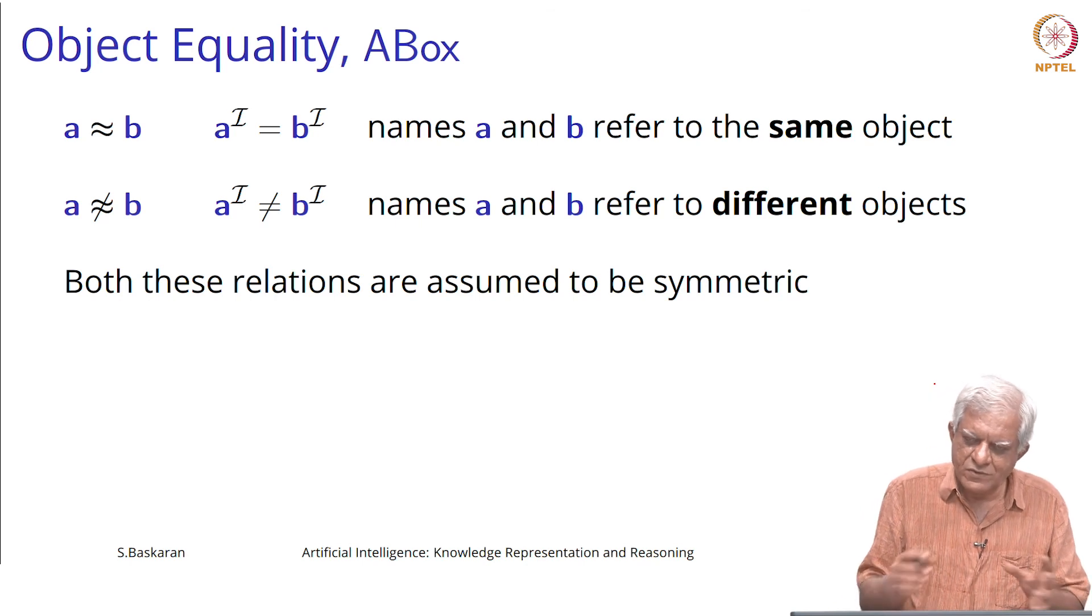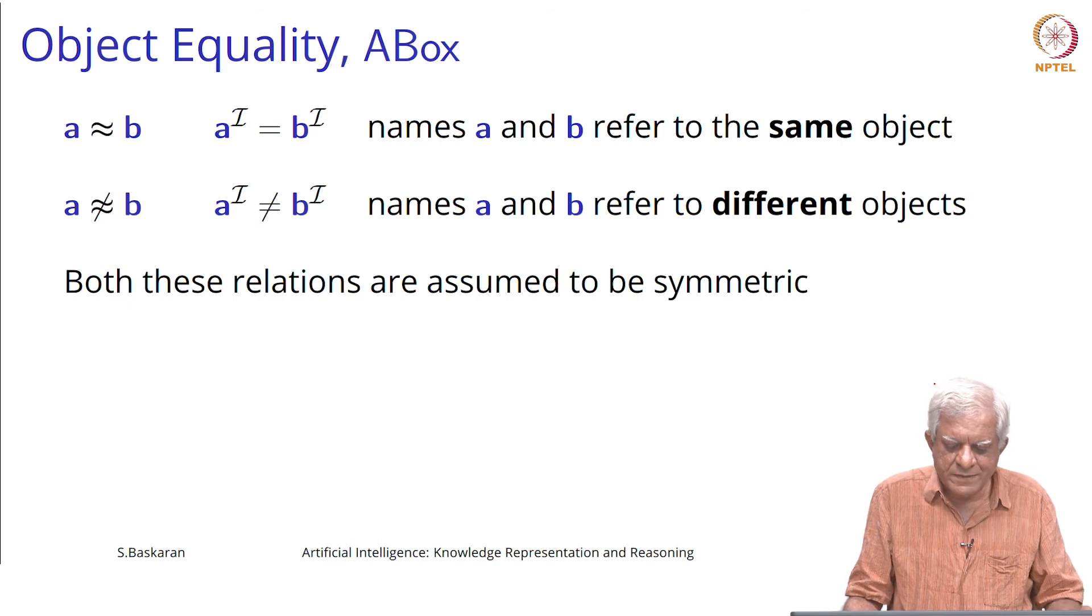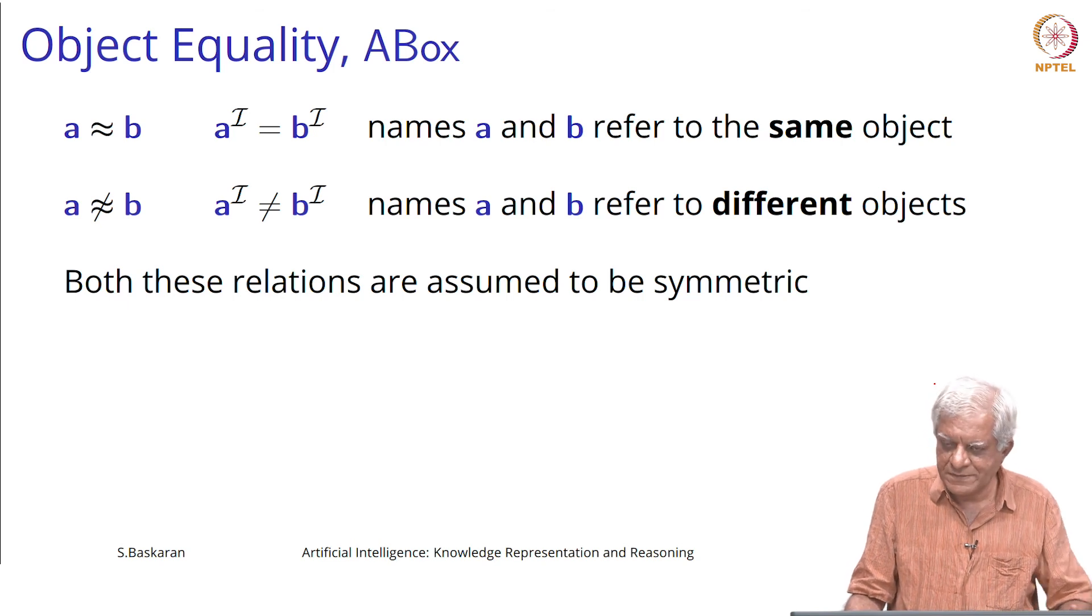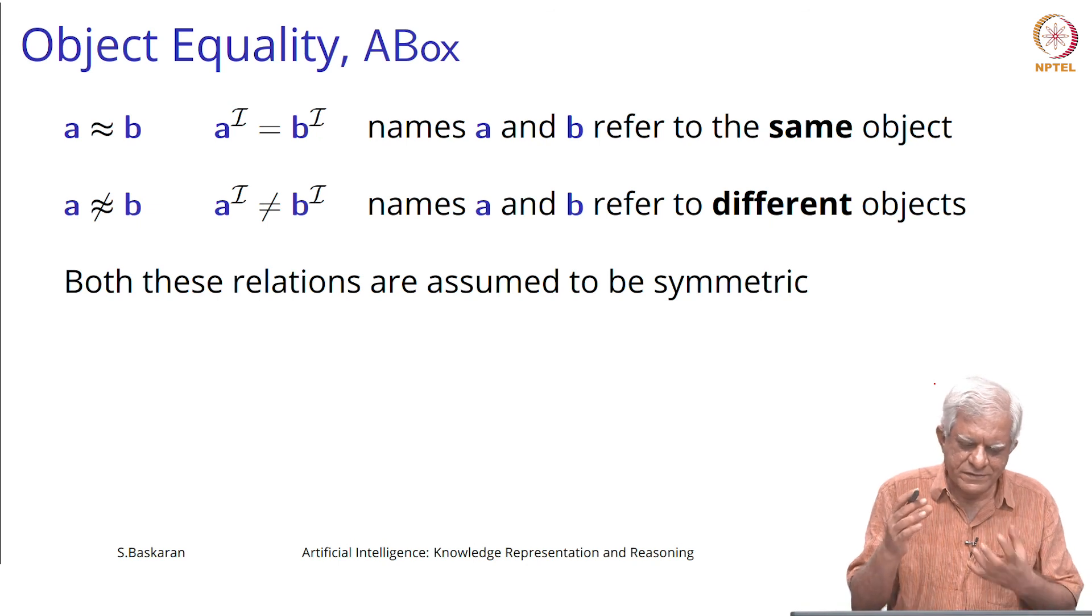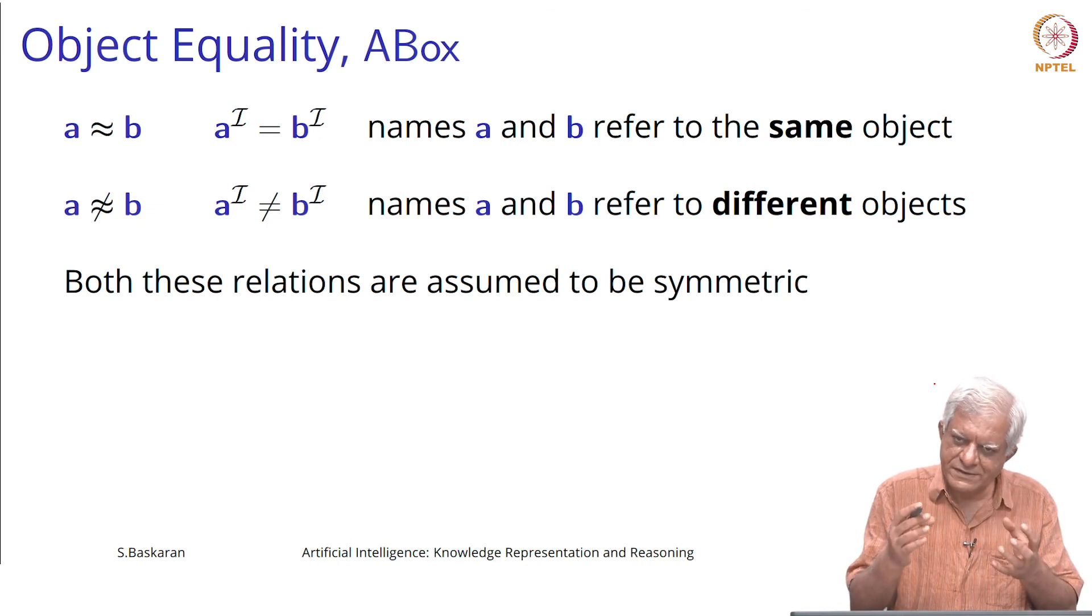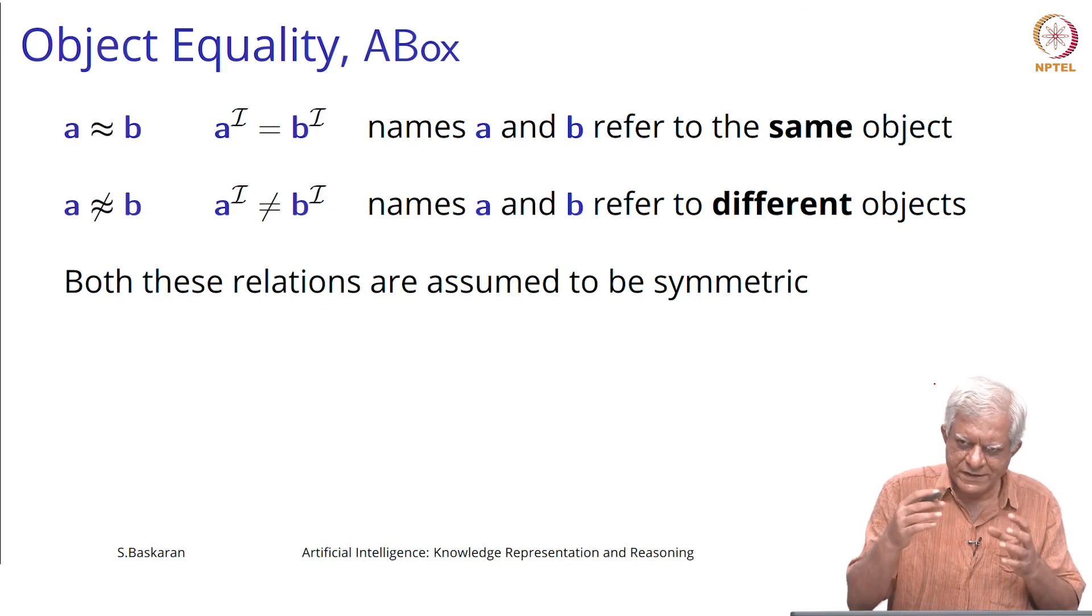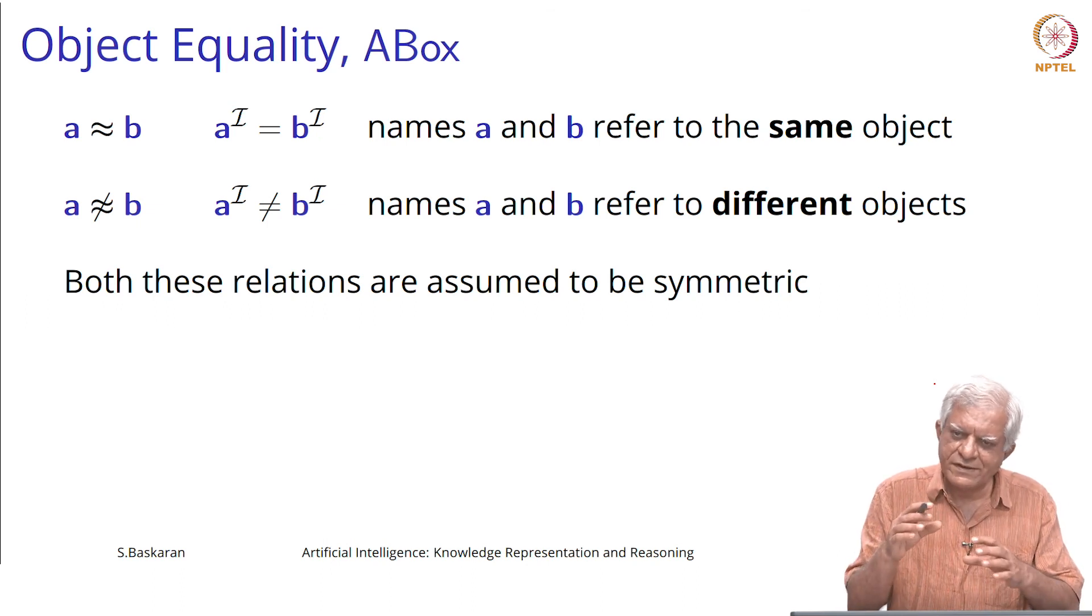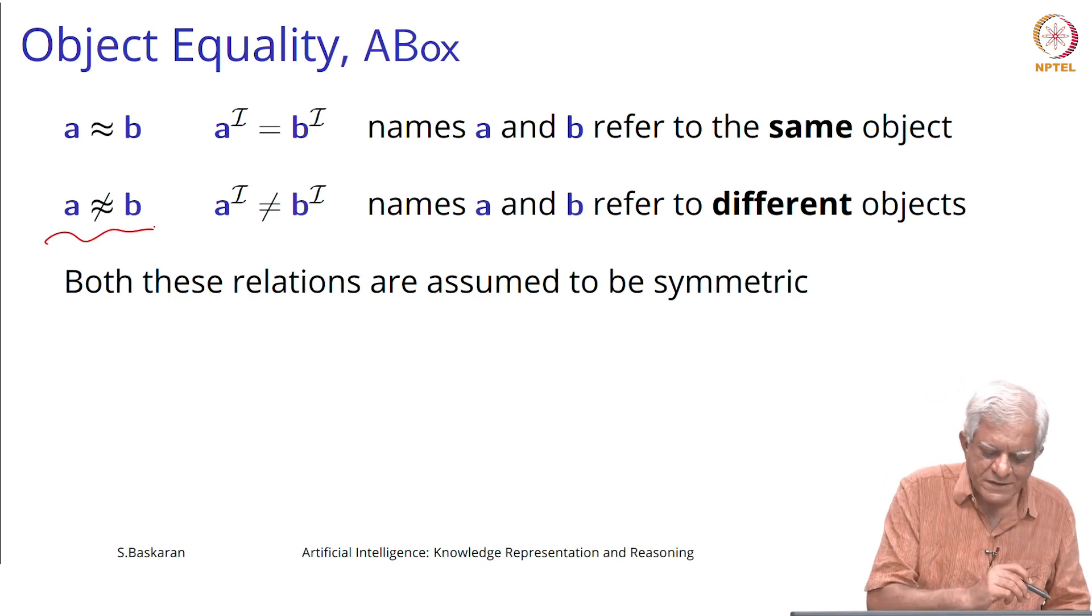Object equality we can say that two individuals are the same or they are different. Remember that we do not have the unique name assumption in description logic. It is possible that two symbols can stand for the same individual, but we can state that they stand for the same individual, we can also state that they do not stand for the same individual. A is not the same as b.